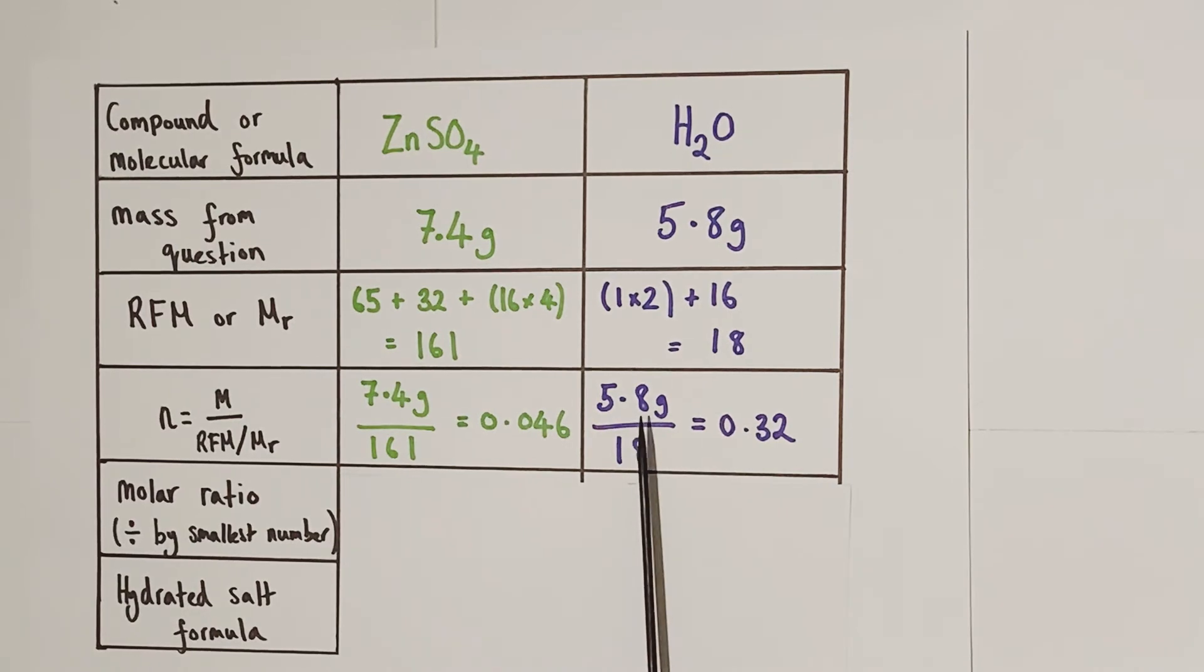5.8 grams of water divided by 18 equals 0.32 moles of water was present in our hydrated salt. So we can see straight off the bat there are many more moles of water than there were moles of zinc sulfate present in the hydrate.